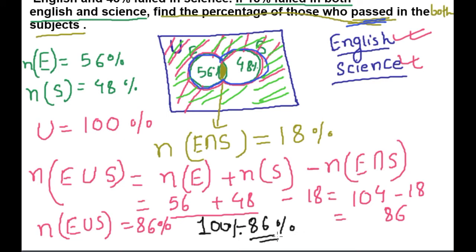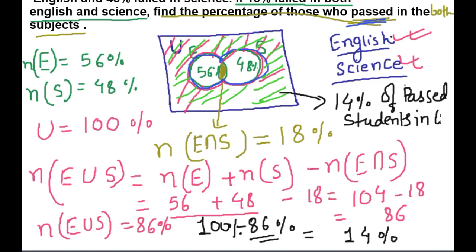86% students fail in English and science, whether they fail in English or science. 86% of students fail in English or science, either English or science. This is equal to 4 and 1, 14%. So this green shade area is 14% and that is the percentage of past students in both subjects.